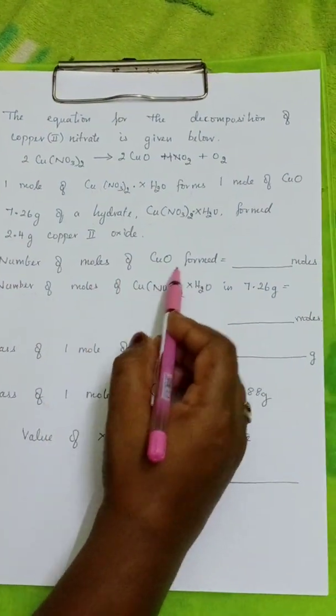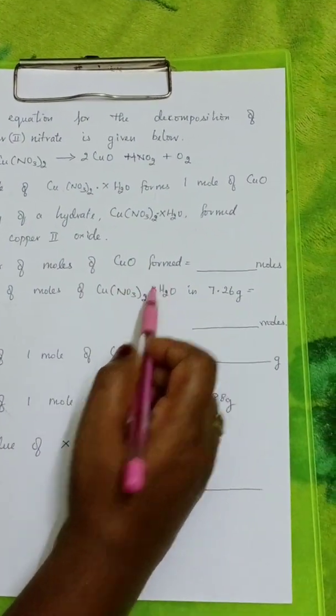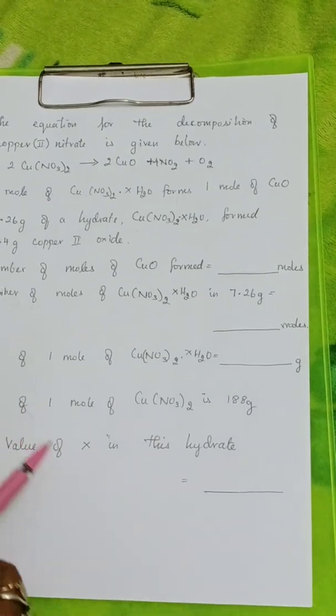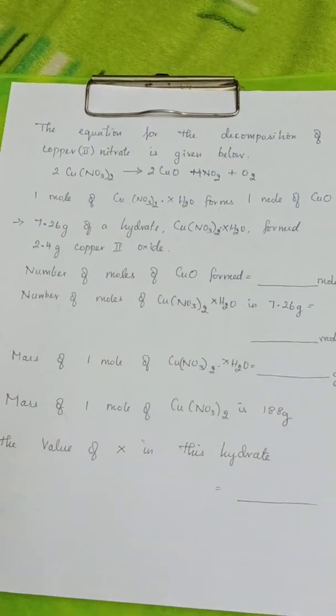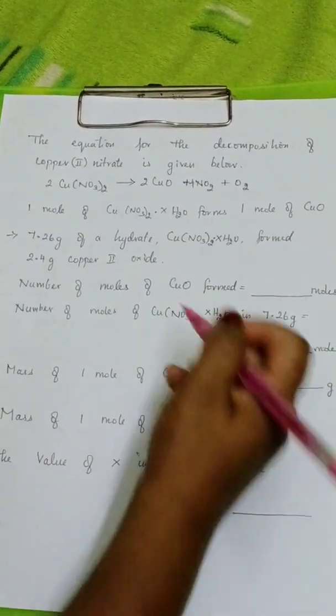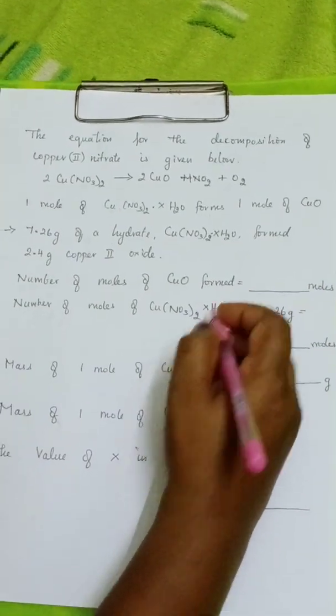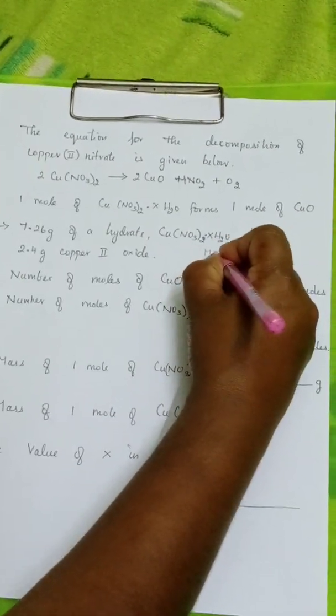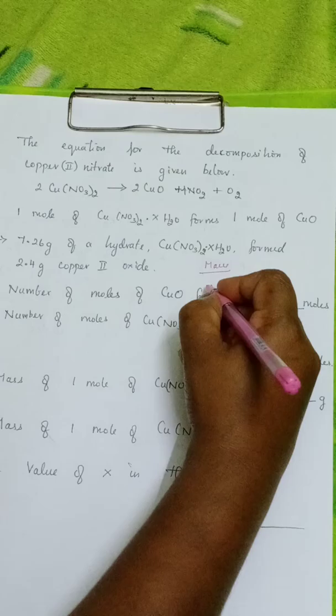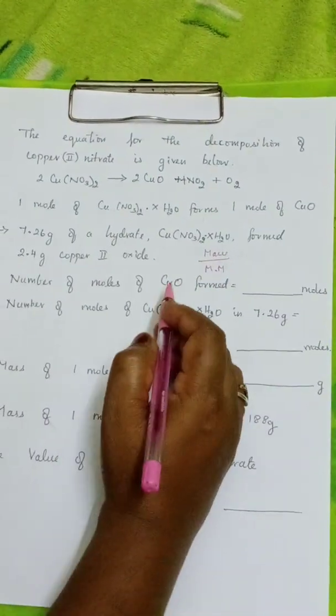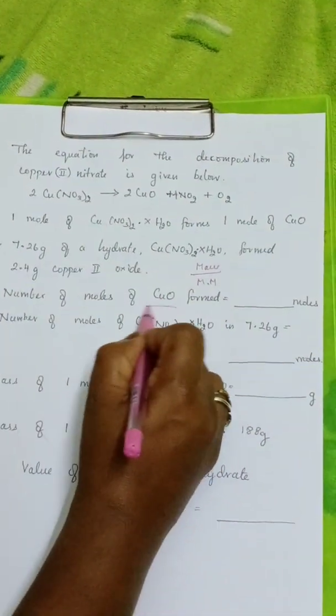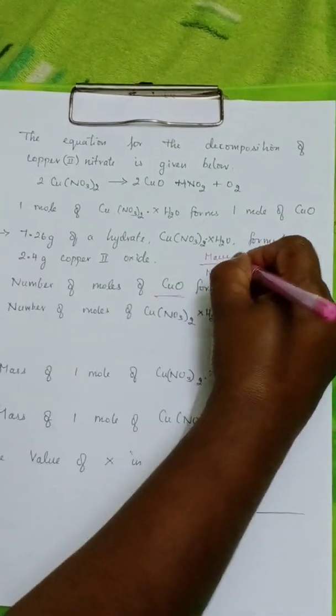Number of moles of copper oxide formed. So, how will you find the mole? What is the formula to find the mole? Mass by molar mass. What is the mass given here?